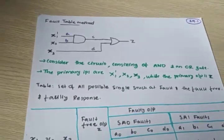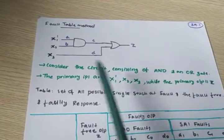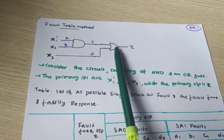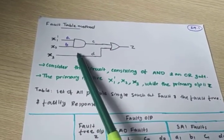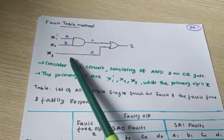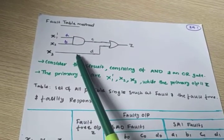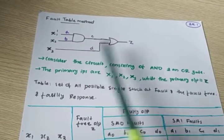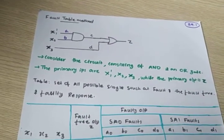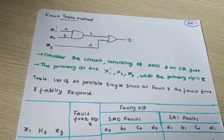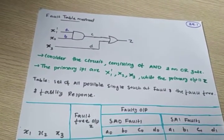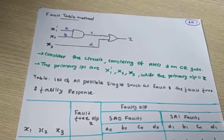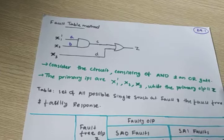The fault table method. Here I am taking a circuit — an AND and OR circuit. In the question, you have to analyze the fault table method and find out the minimum set of states. The question asks to find out the fault test method on this circuit and to find out the minimum test set.